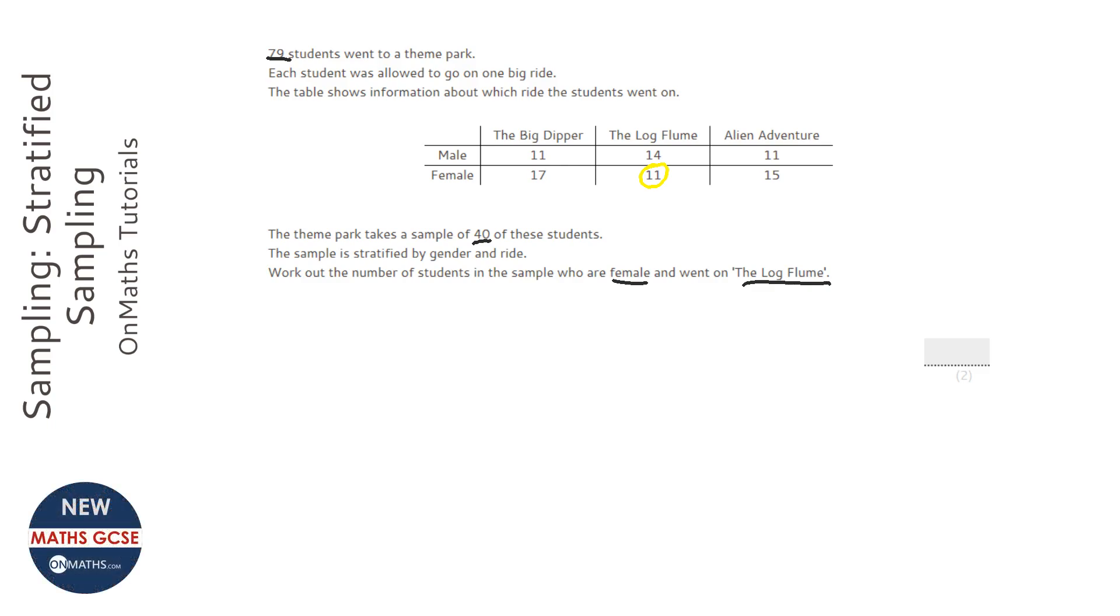But we want a sample of 40. We're not looking to ask all 79, so we're not looking to ask all 11 of those people. Our sample as a fraction of the whole is 40 over 79.